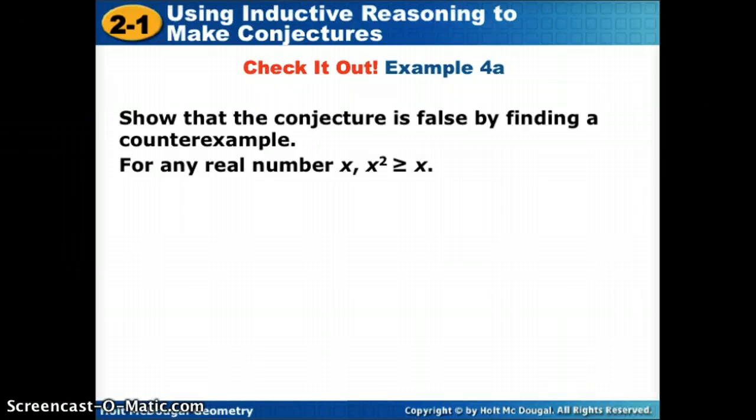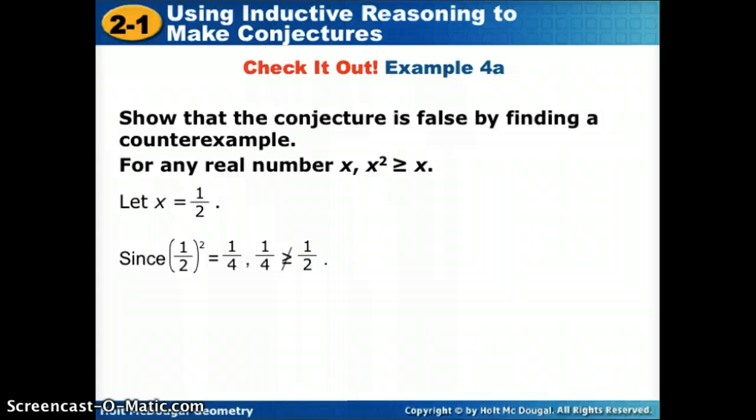So in this one, notice I could use a fraction. What if x was a half? Would that statement be true? Well, we need to know, what is 1 half squared? Well, if I do 1 half times 1 half, I get 1 fourth. Is 1 fourth greater than or equal to 1 half? No, 1 fourth is smaller. So my conjecture is false, because I was able to find a counterexample. If I use a fraction, x squared is not greater or equal to x. So the conjecture is false.